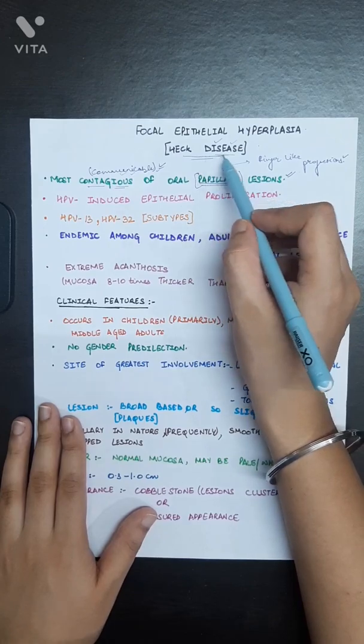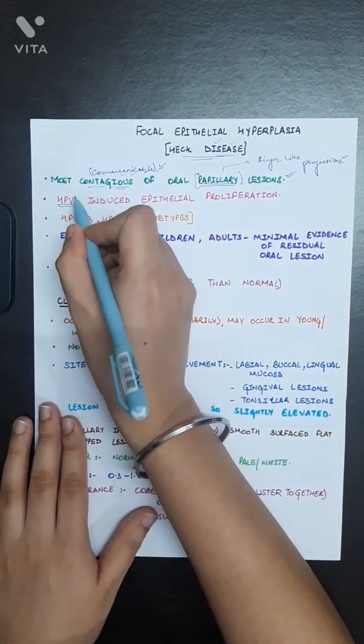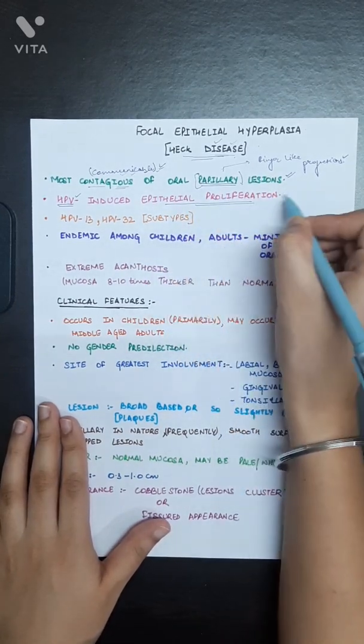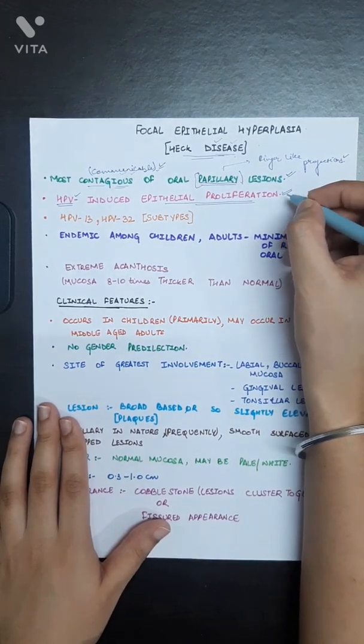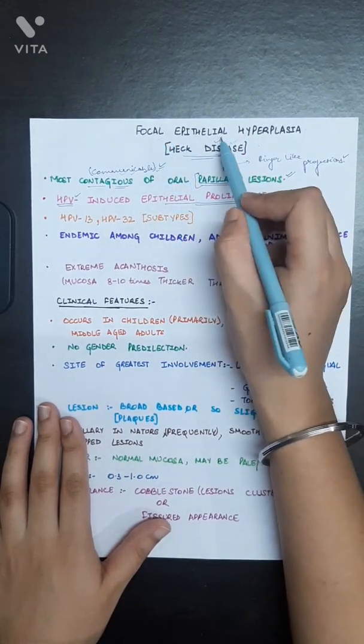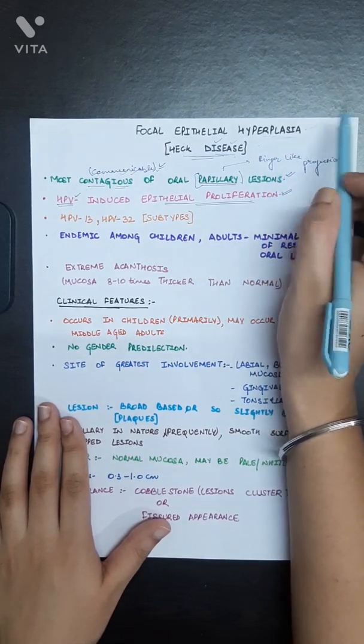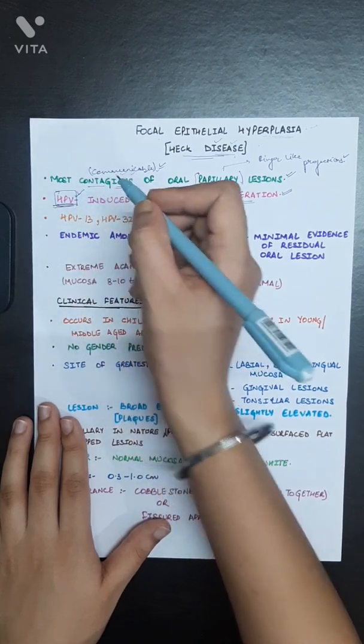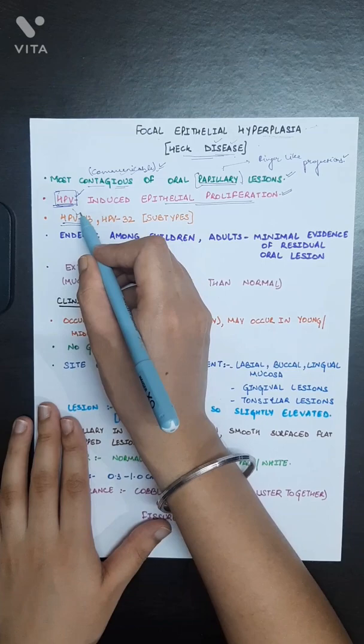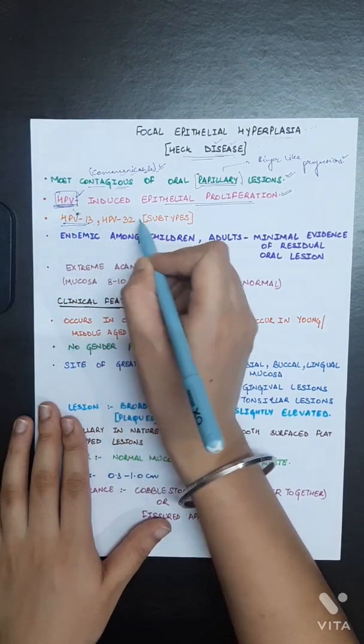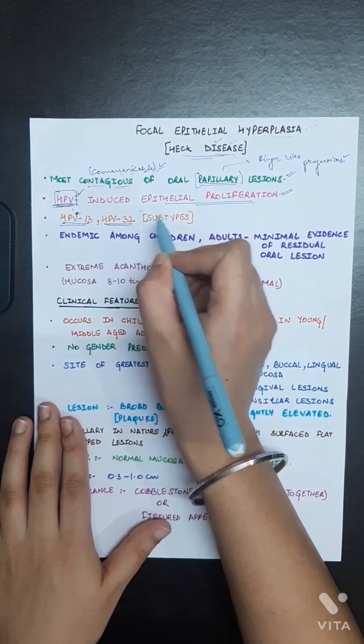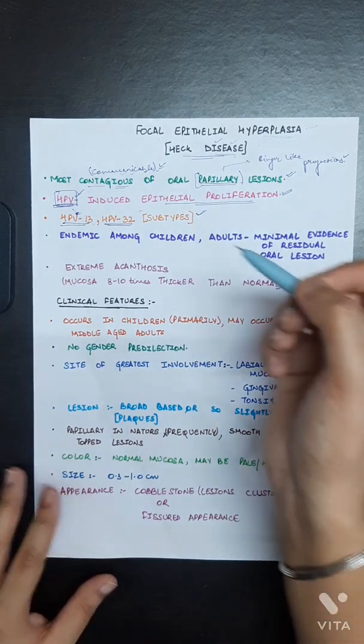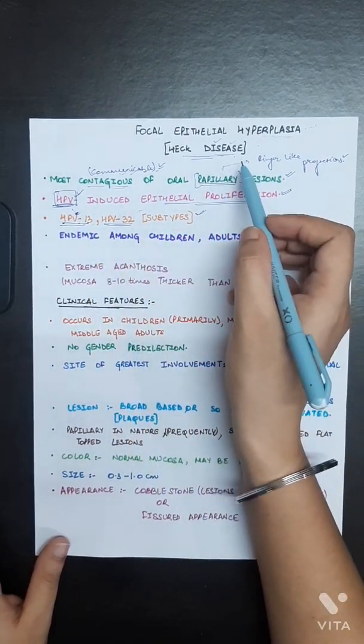This Hegg disease is caused by human papilloma virus, which induces epithelial proliferation in a particular region. That's why the name focal epithelial hyperplasia means increase in the number of cells, caused by human papilloma virus HPV, more commonly by HPV-13 and HPV-32.